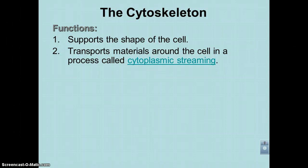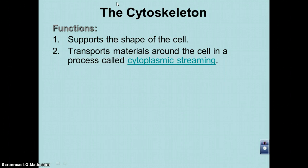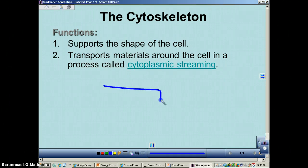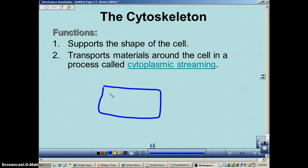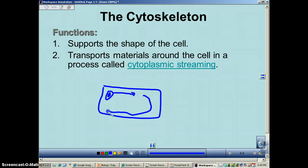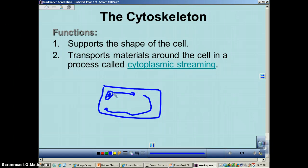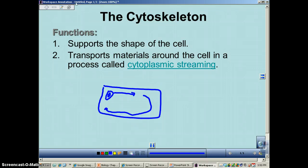The second thing is that it will transport materials around the cell in a process called cytoplasmic streaming. Cytoplasmic streaming is basically when you have a cell with a mitochondrion that may rotate around the cell. That is caused by the cytoskeleton. These would be proteins, and this mitochondrion would kind of ride it like a monorail at Disneyland — it would move around, and that is controlled by the cytoskeleton.